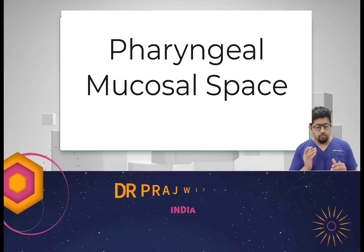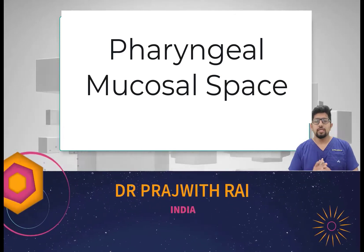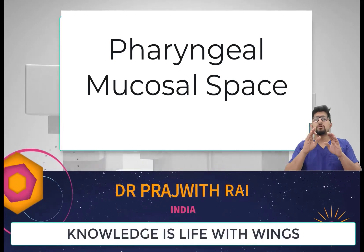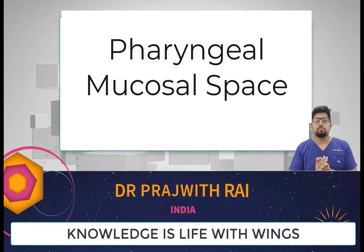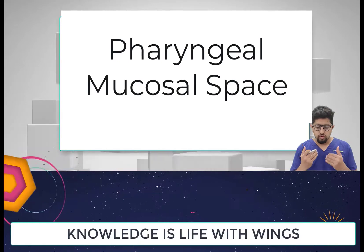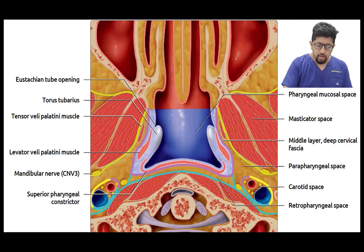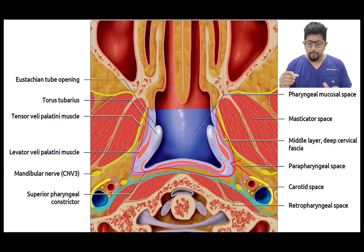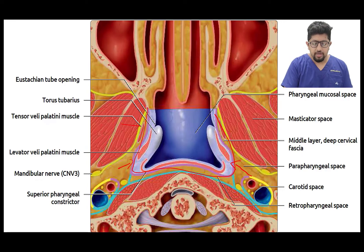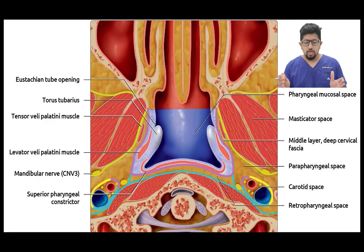Today we are going to discuss the pharyngeal mucosal space. It is the space present in the innermost aspect of the neck spaces, as discussed in previous classes. It is located medial to the parapharyngeal space and medial to the masticator space.